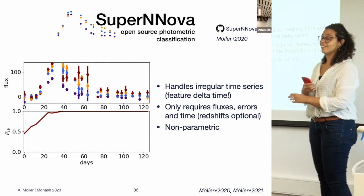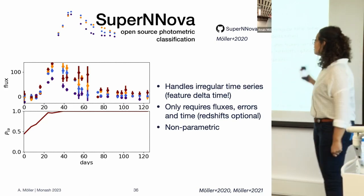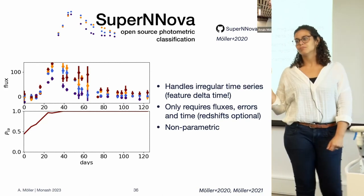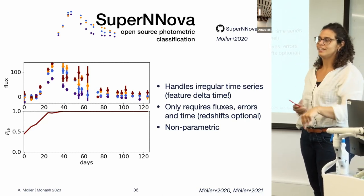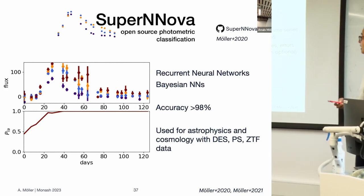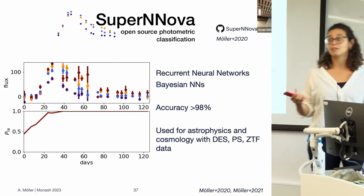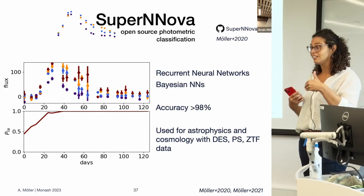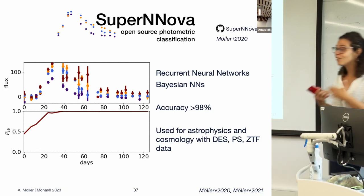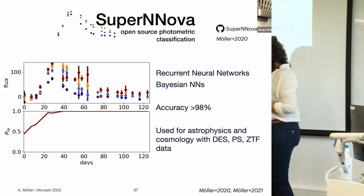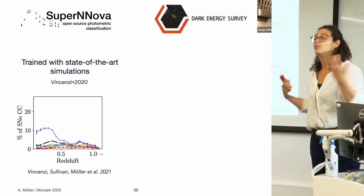SuperNNova handles irregular time series; we only use fluxes, errors, and time. If you have extra information you can use redshifts. It's non-parametric — important because fitting something to the time series biases the sample. It's based on recurrent neural networks, and we also have Bayesian neural networks, which provide not only a classification probability but also an uncertainty. You can use that to find anomalies and assess the classifier's trust. It's more than 98% accurate for simulations.